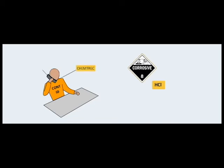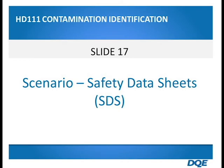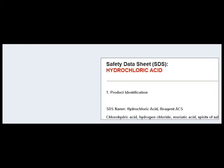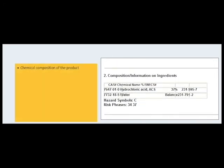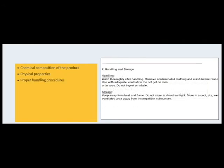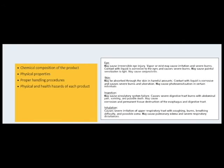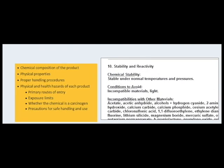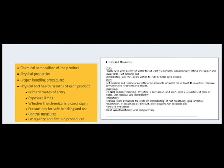To gather further information, Jamie calls ChemTREC to get a safety data sheet or SDS for hydrochloric acid faxed to the hospital. Chemical manufacturers must prepare a safety data sheet for each product and supply it to users. This document identifies the chemical composition, its physical properties, and proper handling procedures. It also assesses the physical and health hazards including primary routes of entry, exposure limits, whether the chemical is a carcinogen, precautions for safe handling and use, control measures, and emergency and first aid procedures.